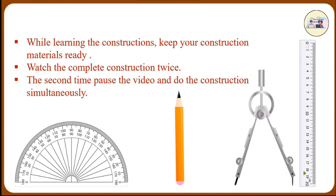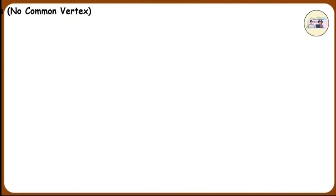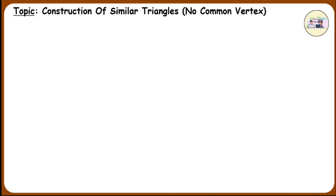1. Construction of similar triangles, Type 1: Construction of two triangles with no common vertex. Let us see one example. Practice set 4.4, question number 1.